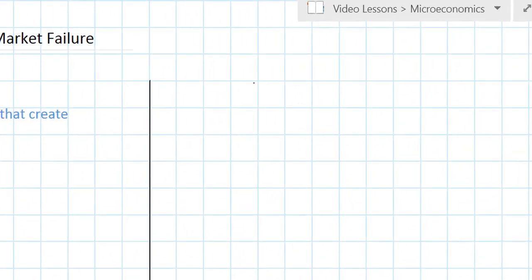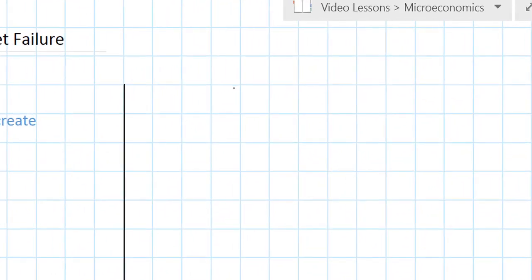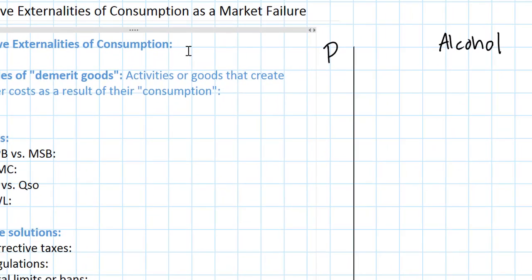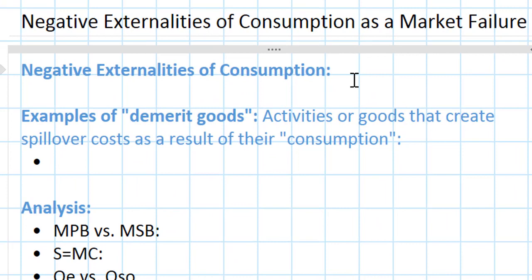Let's give our graph a name here. We're going to be looking at the alcohol market, specifically alcohol consumption. We'll put the price on the vertical axis representing the price of alcohol, and the quantity on the horizontal axis representing the quantity of alcohol consumed. Let's go over to our definition and define what a negative consumption externality is.